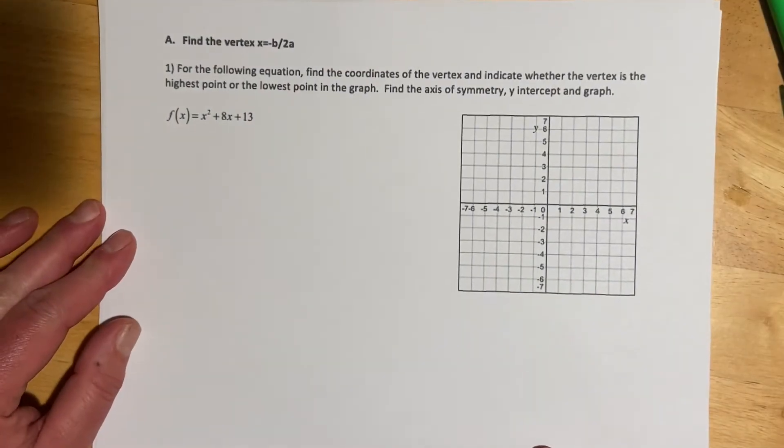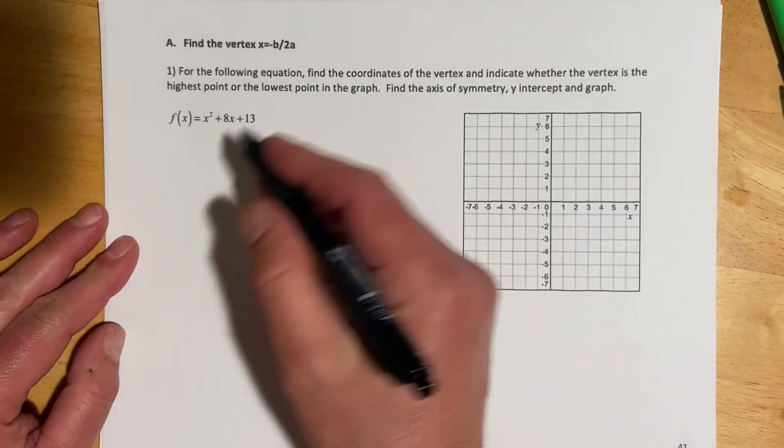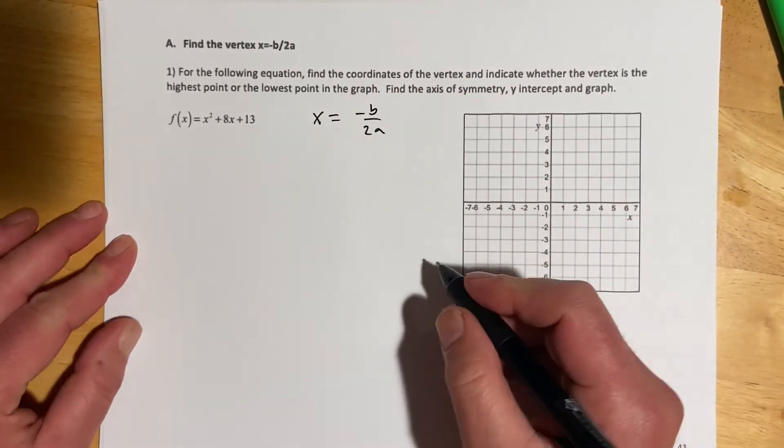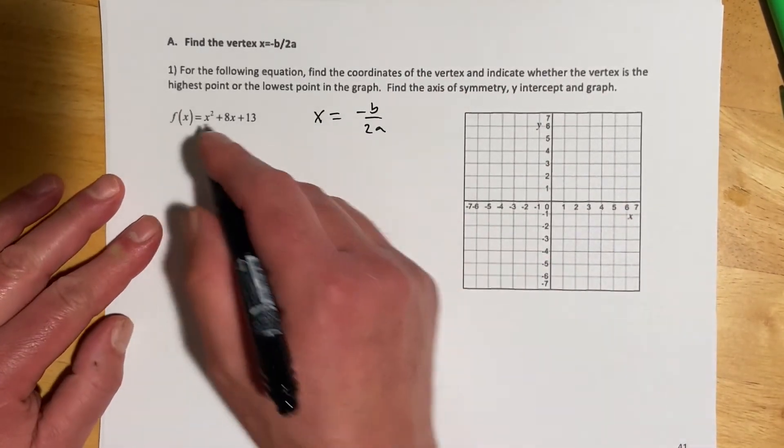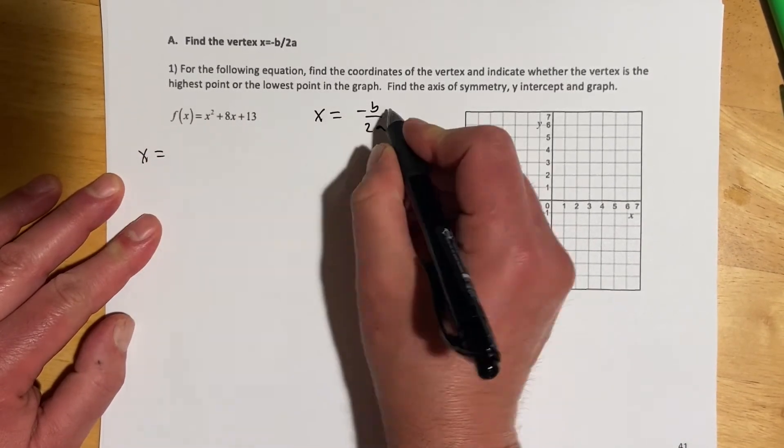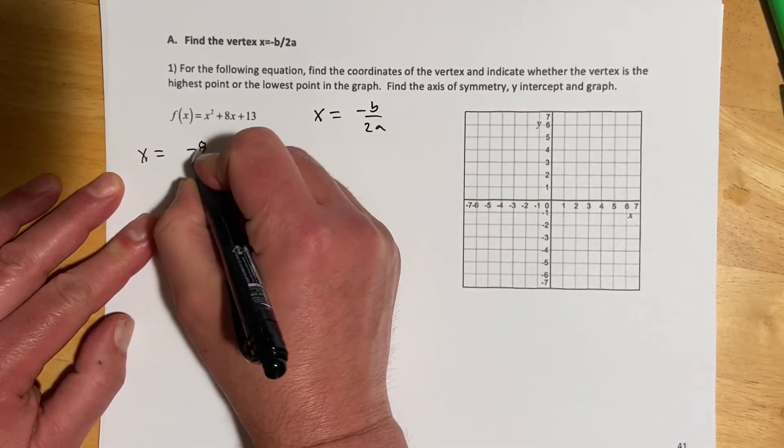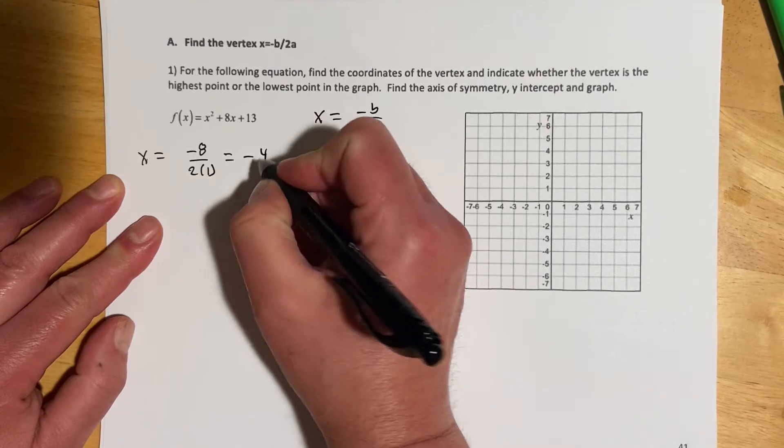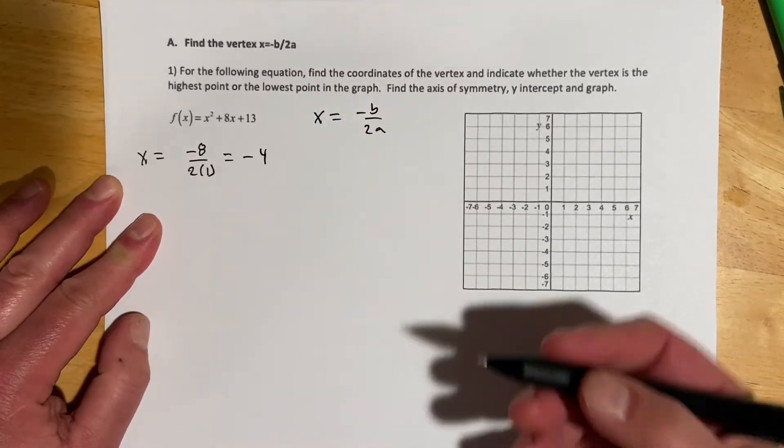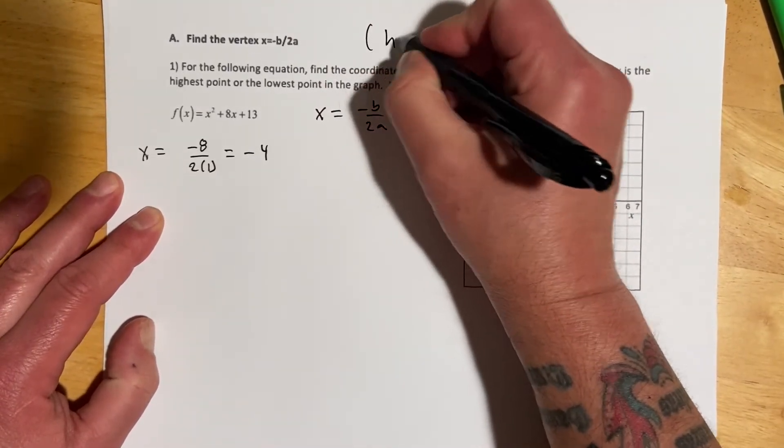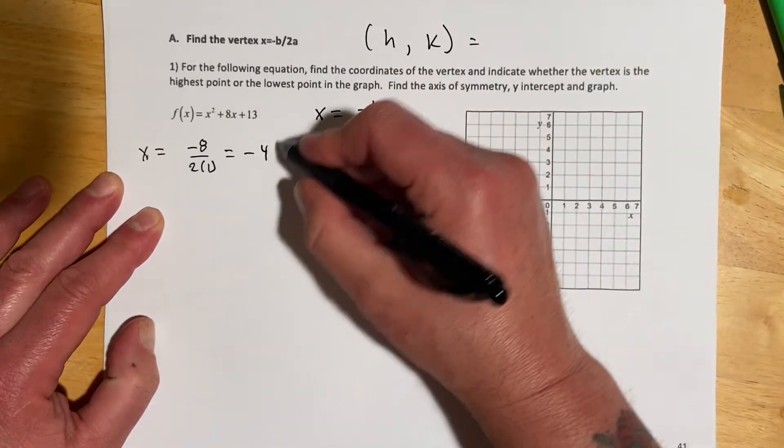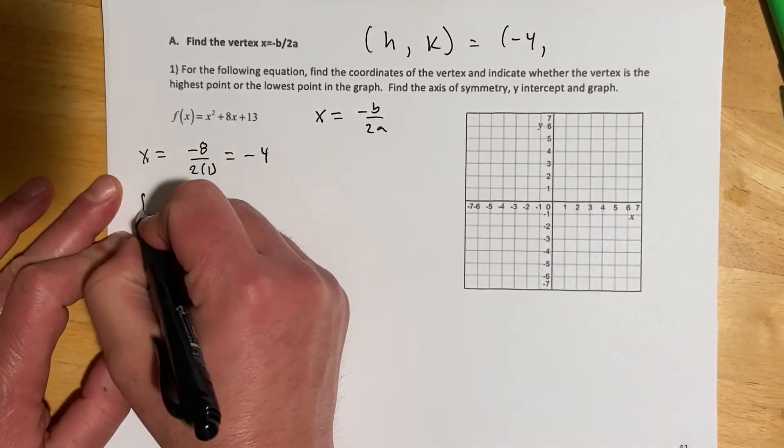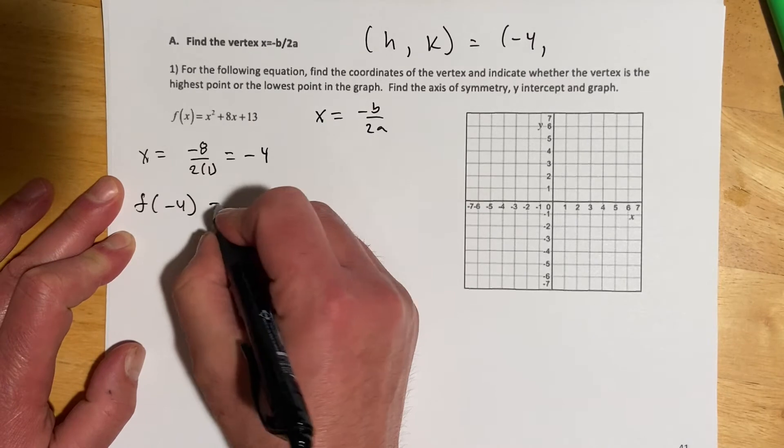So I think I will show this one two ways. So first, let me introduce this idea of x equals negative b over 2a as a way to get the vertex from standard form. So with this, x would be negative b would be negative 8 over 2 times 1. So that would be negative 8 over 2, which is negative 4. So that's the x-coordinate of the vertex. And then to find k, I'll find f of negative 4.